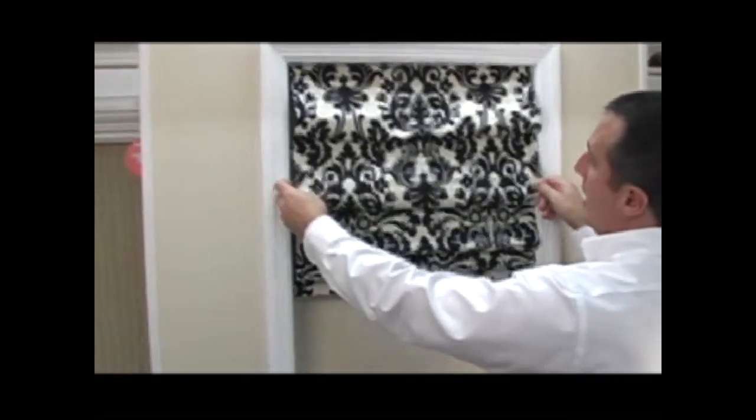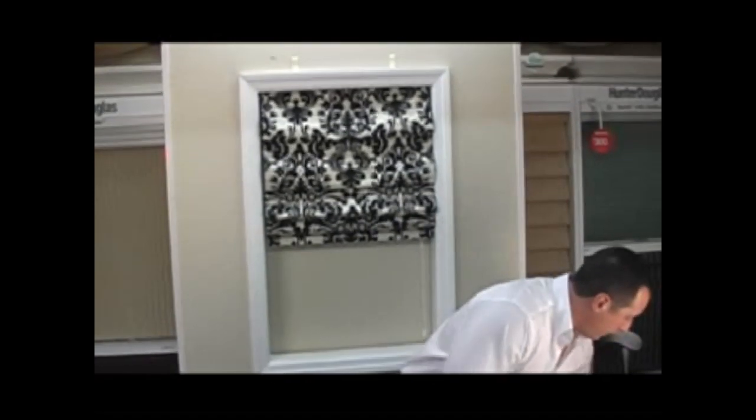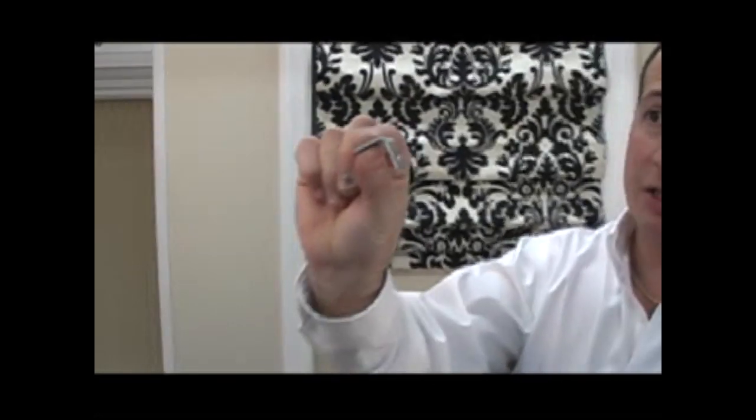Now if you ordered your shade as an outside mount, the installation process is slightly different. We are going to supply you with a minimum of two metal L brackets that look something like this.